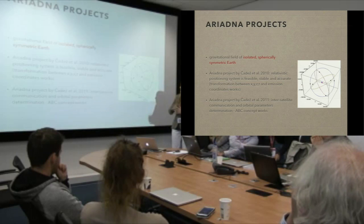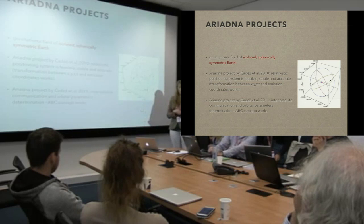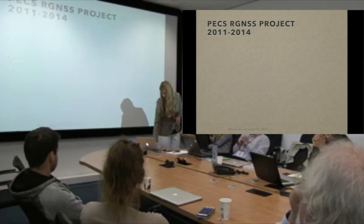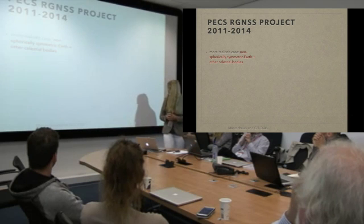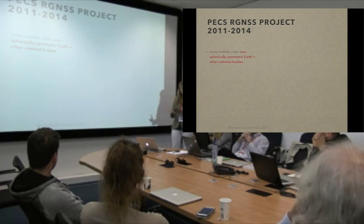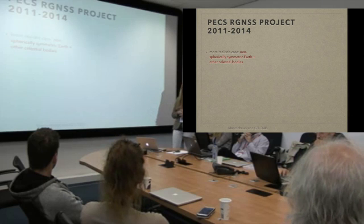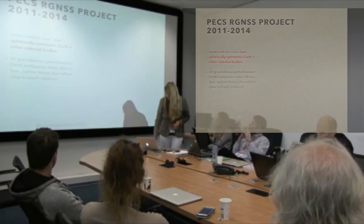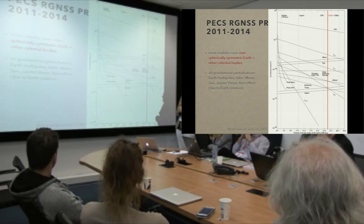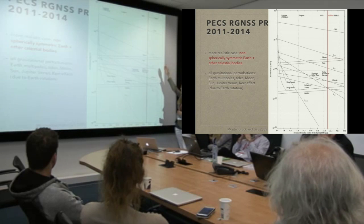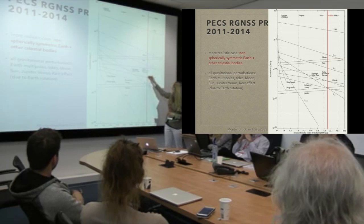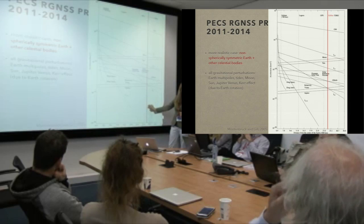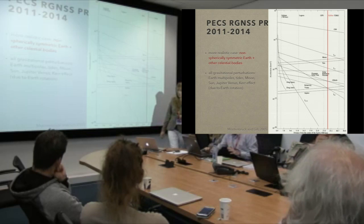Of course, the assumption that the Earth's gravitational field is spherically symmetric is not really correct. So the continuation was to treat a more realistic case: Earth is not spherically symmetric, and other celestial bodies such as the Moon and Sun can also influence satellite motion. We included all gravitational perturbations considered relevant: Earth multipoles, Moon, Sun, tides, relativistic effects, Venus, Jupiter, and even the Kerr effect due to Earth's rotation.